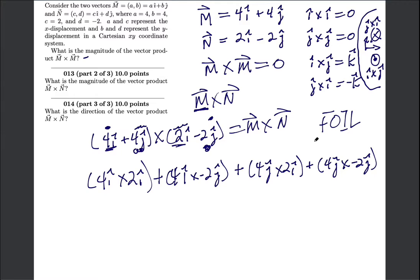Now there are a couple of throwaway answers. There's an i-hat crossed with an i-hat, that's zero. There's a j-hat crossed with a j-hat, that's also zero. So we can simplify this a little.